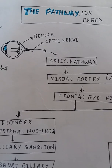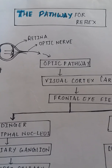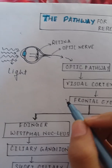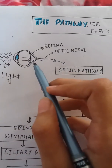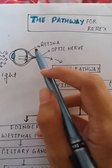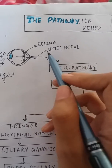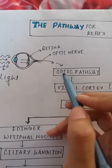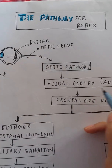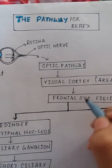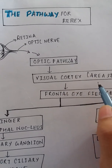Now let's go through the pathway for accommodation. First, light enters the eyeball and the rays are focused on the retina. From there, impulses travel along the optic nerve to the optic chiasma, and then into the optic pathway, from which the impulses reach the visual cortex.